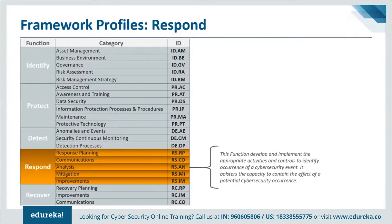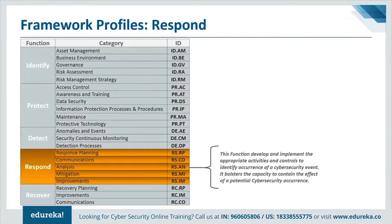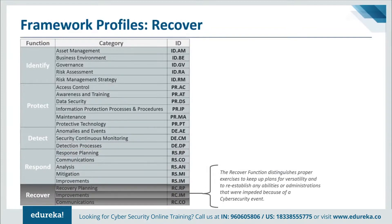Next we have the Respond function, used to develop and implement appropriate activities to take action regarding a detected cybersecurity incident. The Respond function supports the ability to contain the impact of a potential cybersecurity incident. The outcome categories within this function include response planning, communications, analysis, mitigation, and improvements.